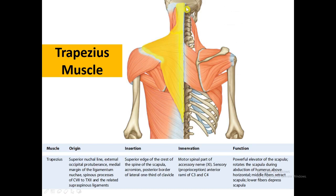The trapezius is a large muscle — the left side is shown here and the right side is dissected. The origin of the trapezius muscle is from the superior nuchal line on the back of the occipital bone, the external occipital protuberance, the medial margin of the ligamentum nuchae, the spinous processes of C7 to T12, and the related supraspinous ligament.